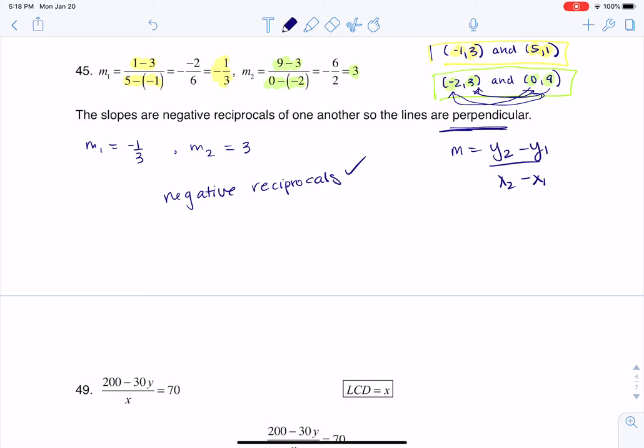On the flip of that, if the slopes were the same, like if this slope was negative 1/3 and this one was also negative 1/3, then the slopes would be parallel. All right, thanks so much everyone, bye.